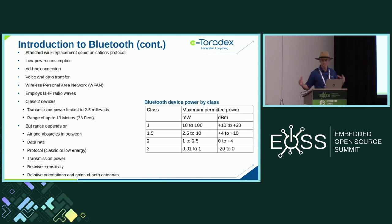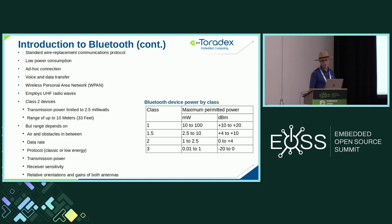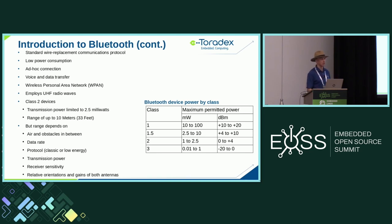That means it's really confined to around the person — not really meant to go hundreds of meters, at least originally. Of course, the range depends heavily on multiple factors: whether anything is blocking it, the speed mode in use, whether it's classic or low energy, the Bluetooth transmit power class, the sensitivity of the receiver, and antenna technology and alignment.